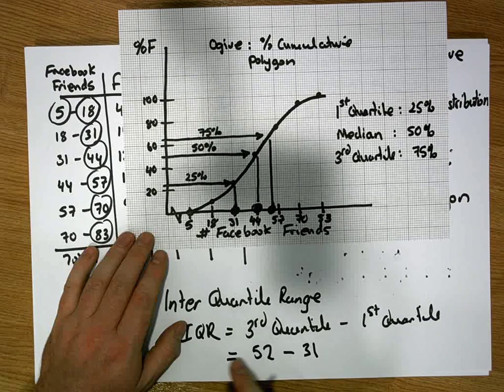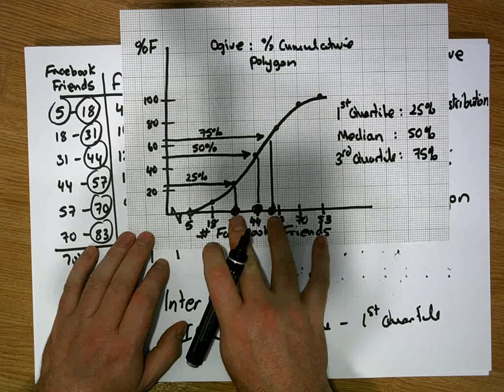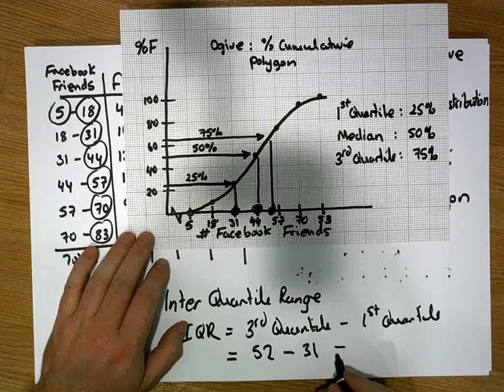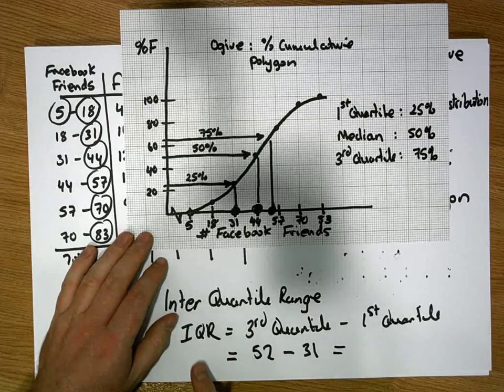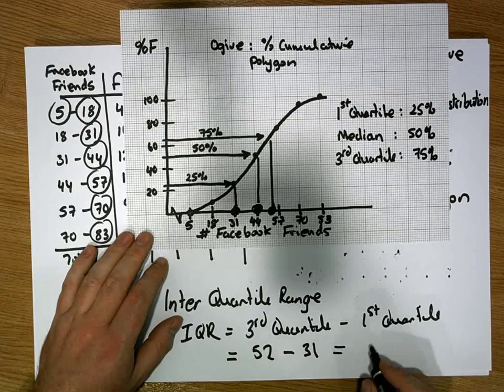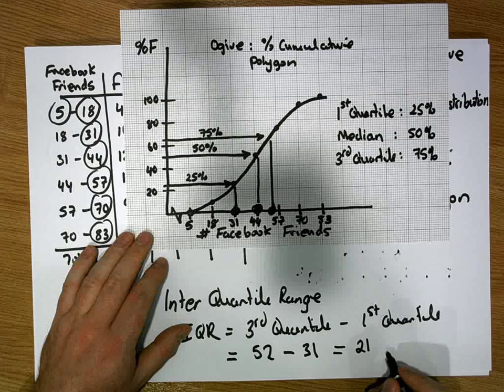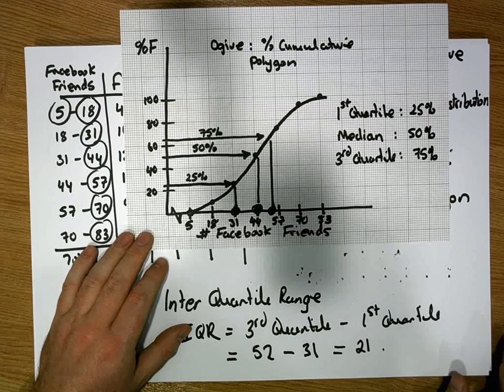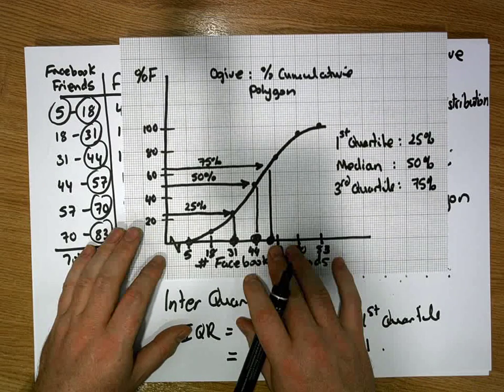So it tells us that the distance between the first quartile and the third quartile, also known as the interquartile range or the IQR, seems to be about 21 units or 21 Facebook friends. Okay guys, I hope that was helpful. This short video was how to construct an ogive from a grouped frequency distribution.